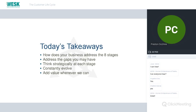Jumping into today's takeaways: think about how your business addresses the eight stages of the customer lifecycle. How do you address any gaps that you may have? Think strategically at each stage — your customers' needs are specific to where they are in the lifecycle. How do you address those specifically? Constantly evolve — just because something failed in the way you delivered it doesn't mean it's a bad thought. Learn from why it failed, adapt. And add value whenever you can, whether directly to clients or to the industry itself.